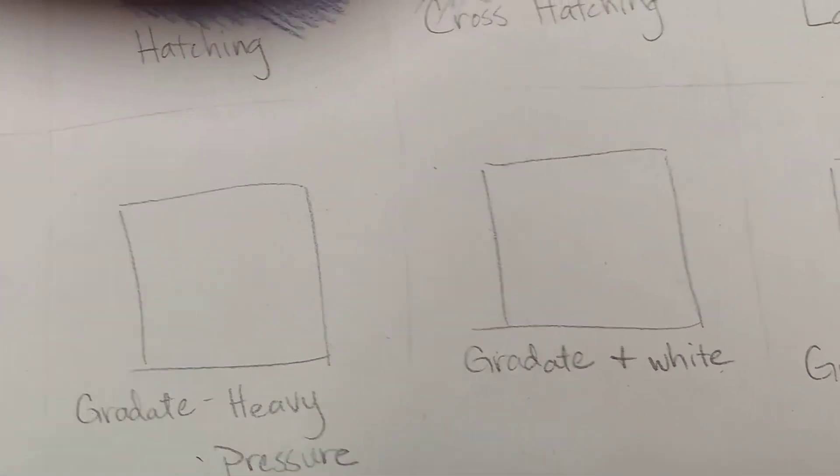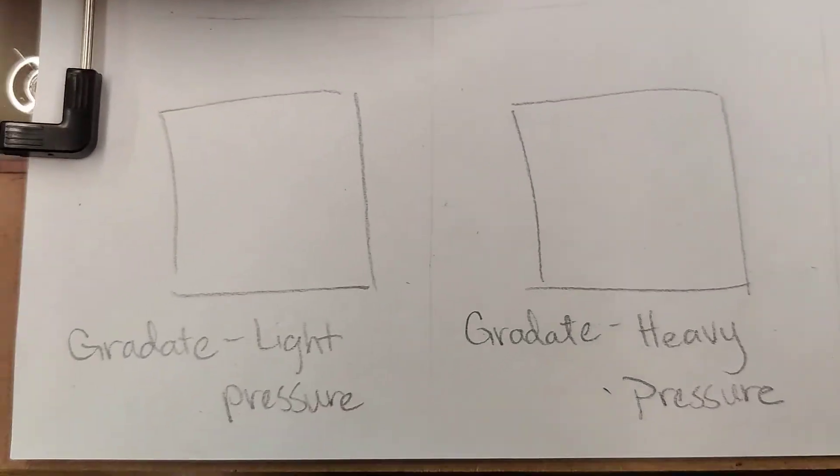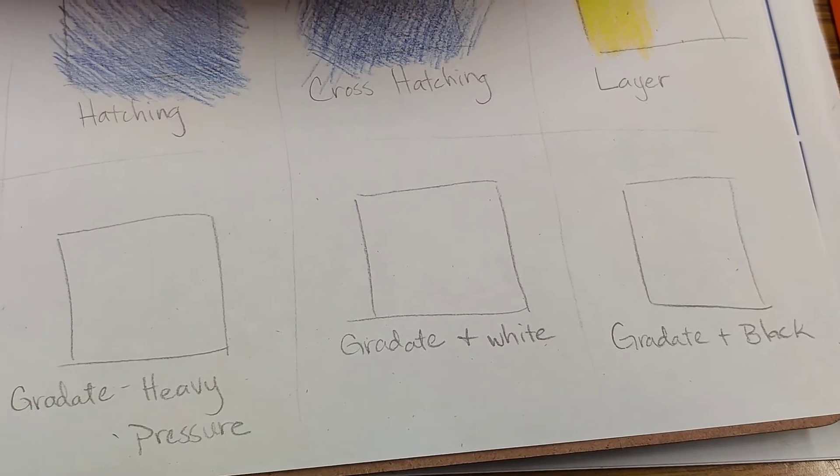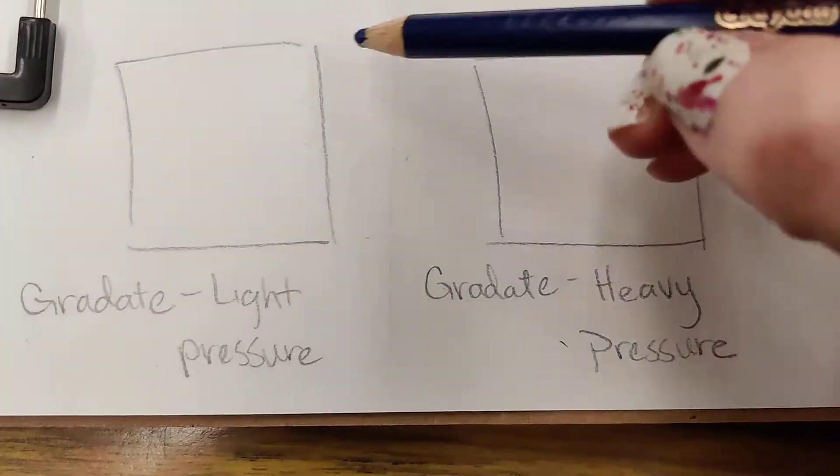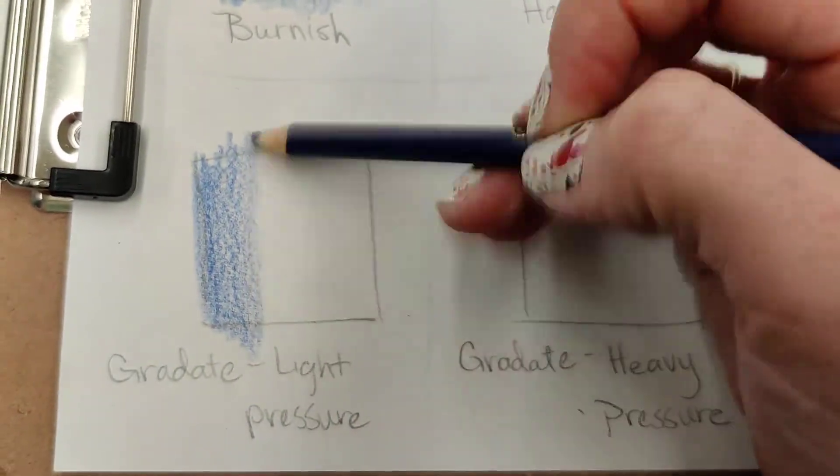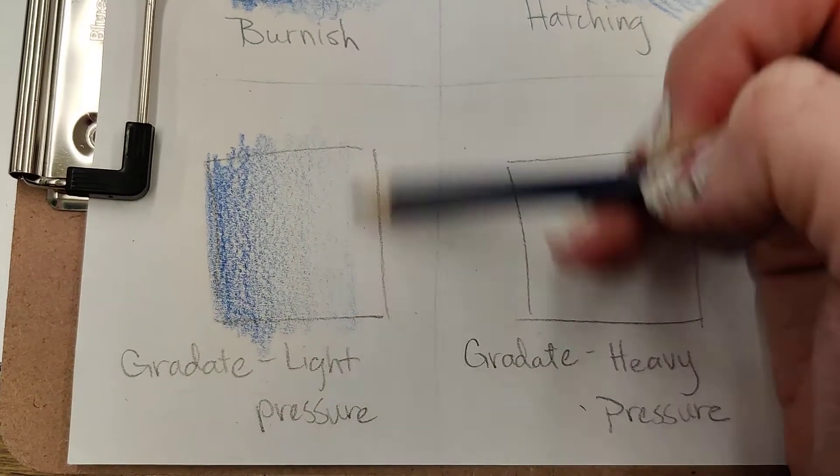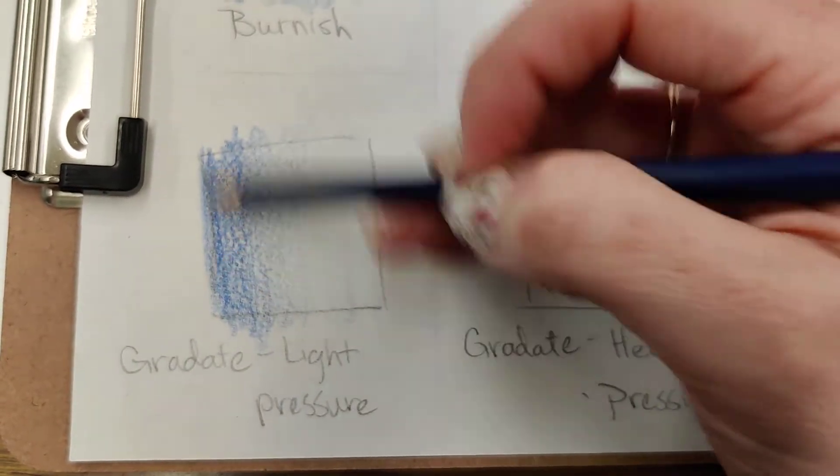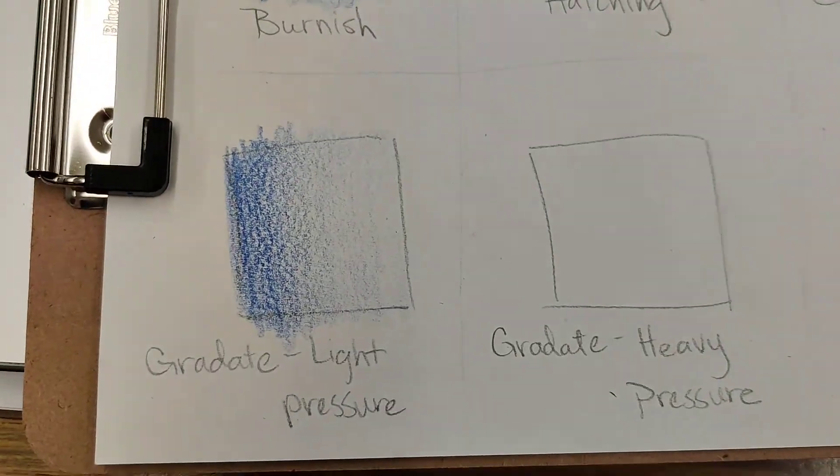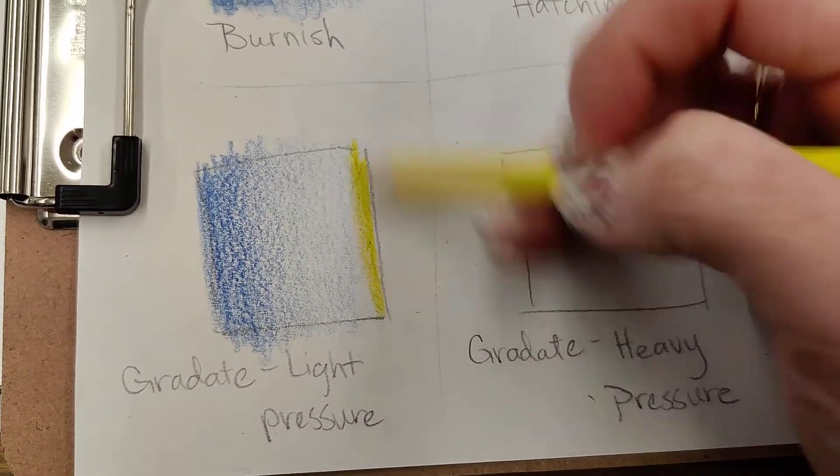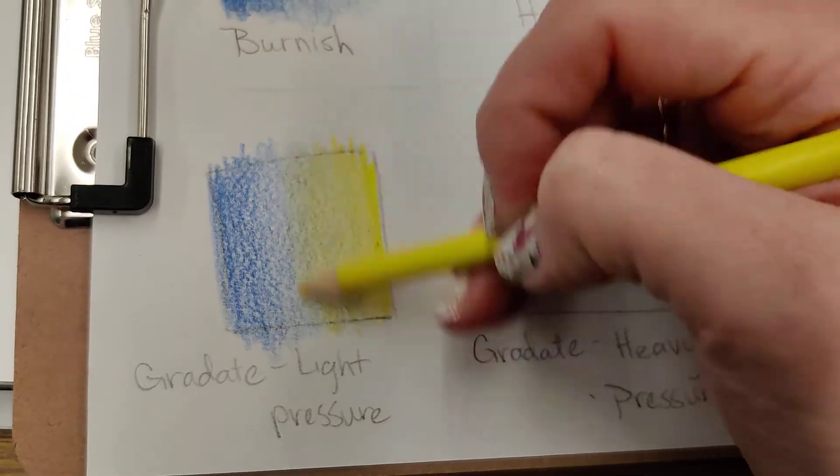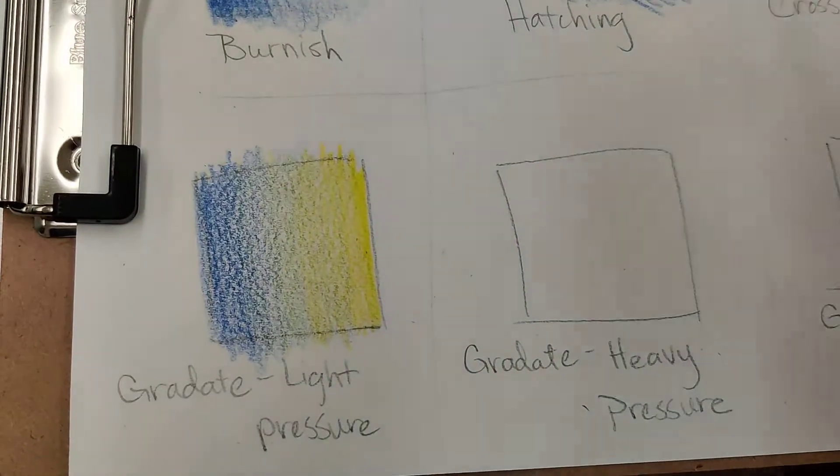So now we're going to gradiate with light pressure and heavy pressure, and then we're going to go with black and white. So what's the difference here is that we're going to blend two colors together. So I'm going to start over here with my light pressure, and I'm just going from the left to the right. And then I'm going to take good old yellow. And do the same thing. Starting darker on that starting side, and then blending. I'm getting lighter and lighter and lighter and lighter over here. Voila.